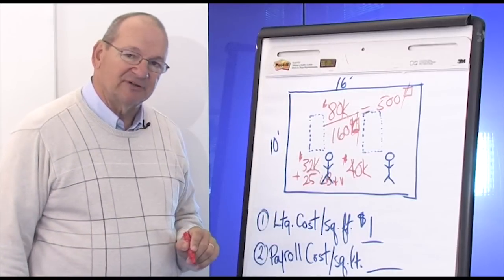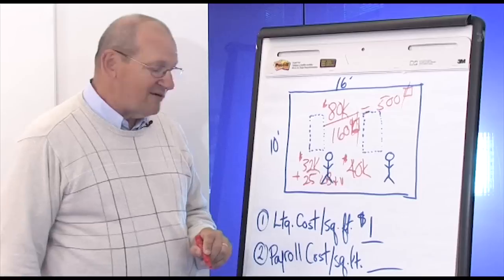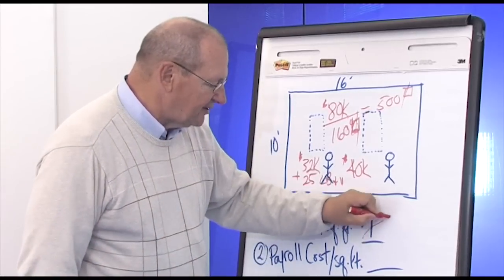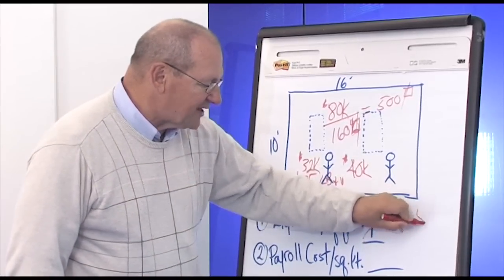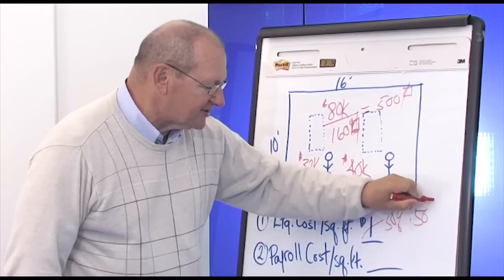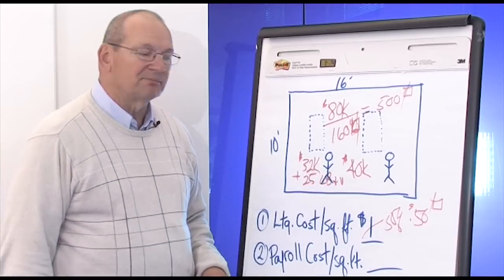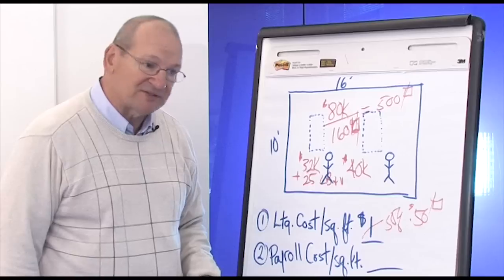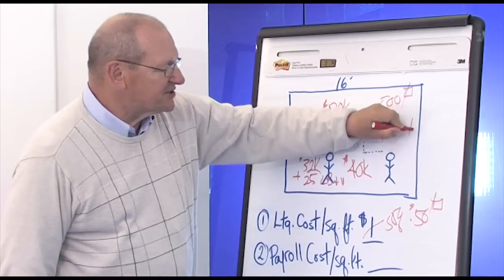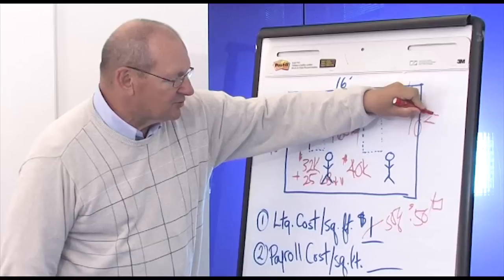It's a dollar a square foot for lighting. If we save them 50%, we've saved them 50 cents a square foot. If we don't get the lighting right and we're only wrong by a couple of percentage points, we could cost them as much as $10 per square foot.